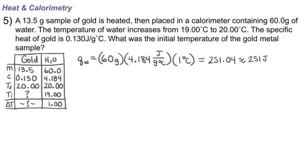So that is my Q for my water. I know that the Q for my gold, which I'll use its chemical symbol Au, the Q for my gold is going to be the opposite sign. Whatever heat is taken in by the water is given off by the metal, so my Q for my gold is negative 251 joules.